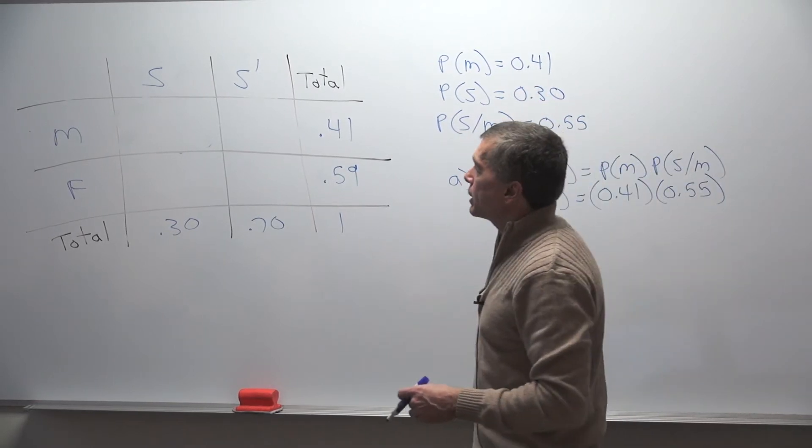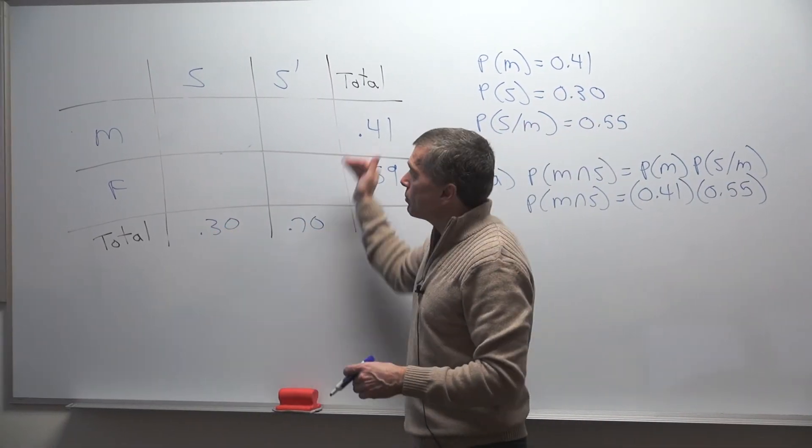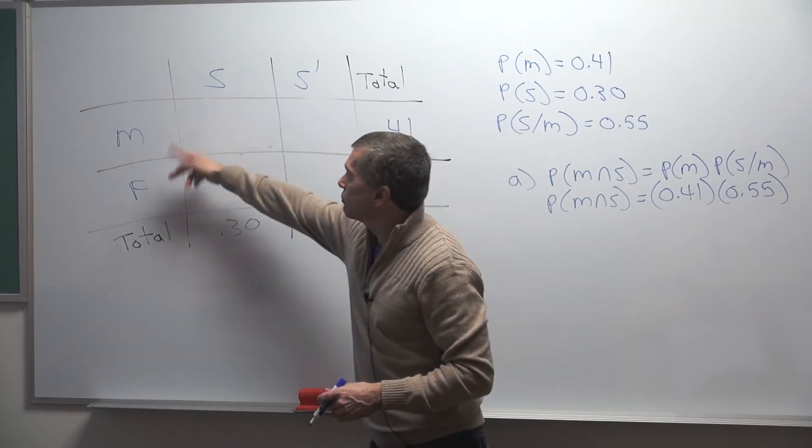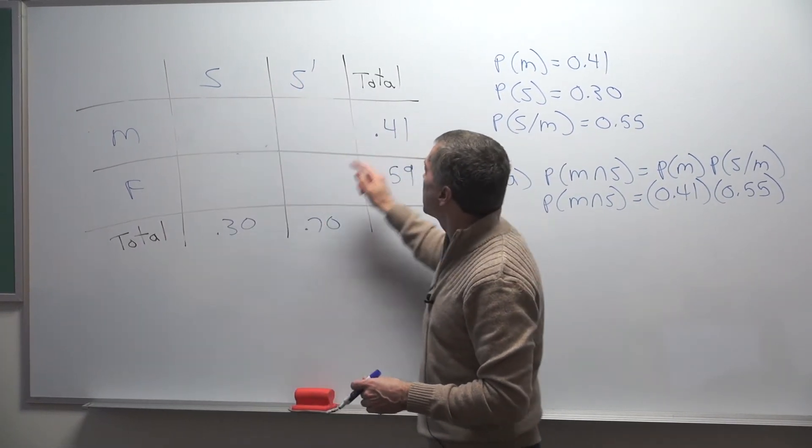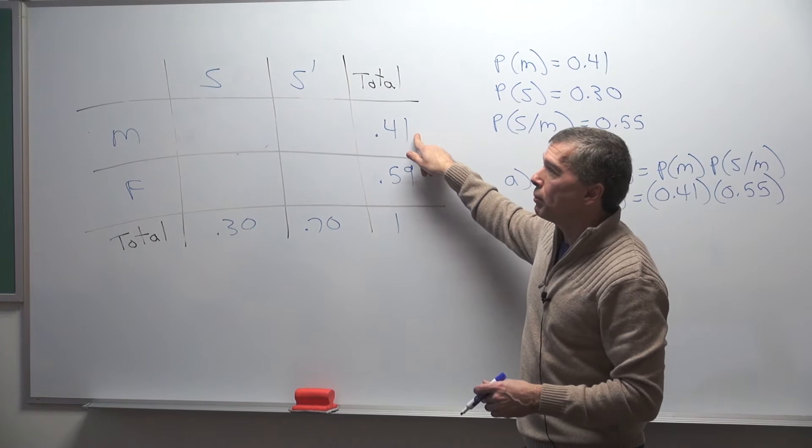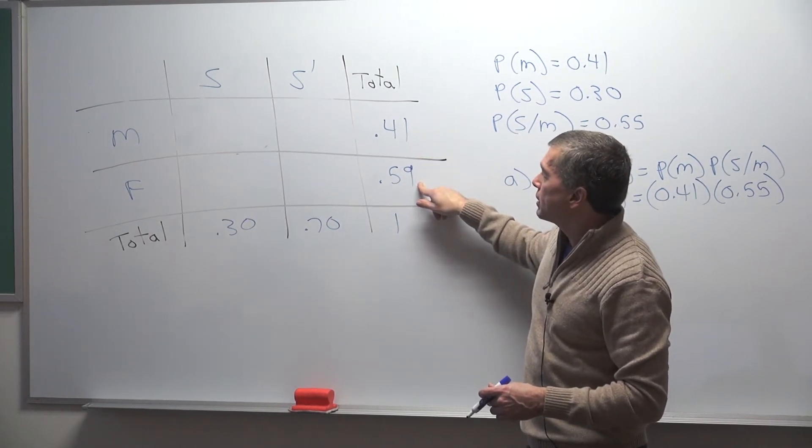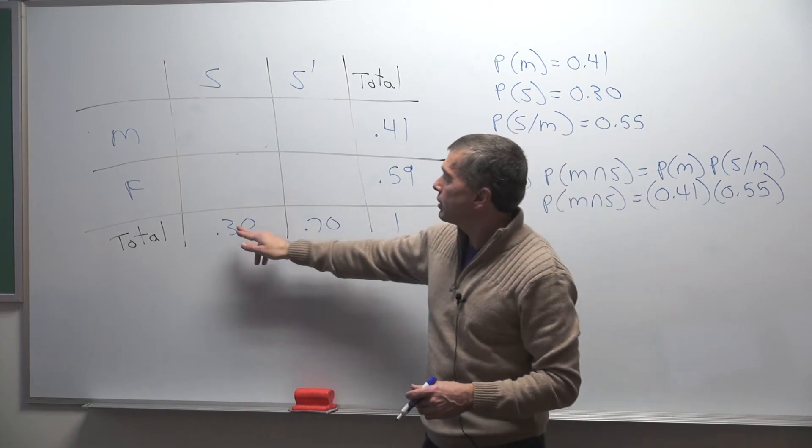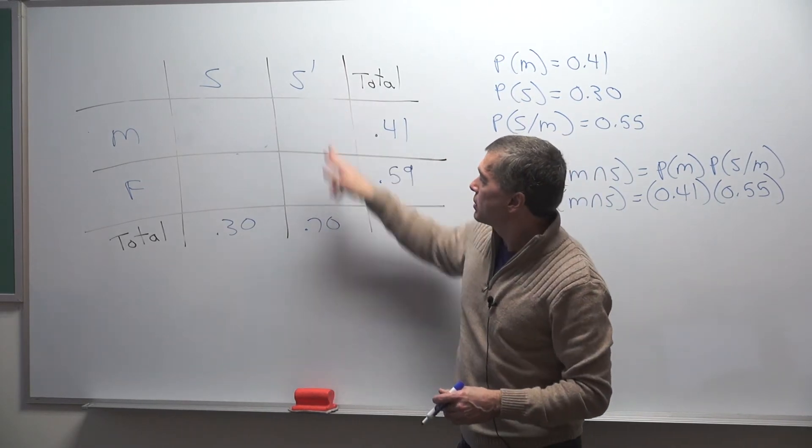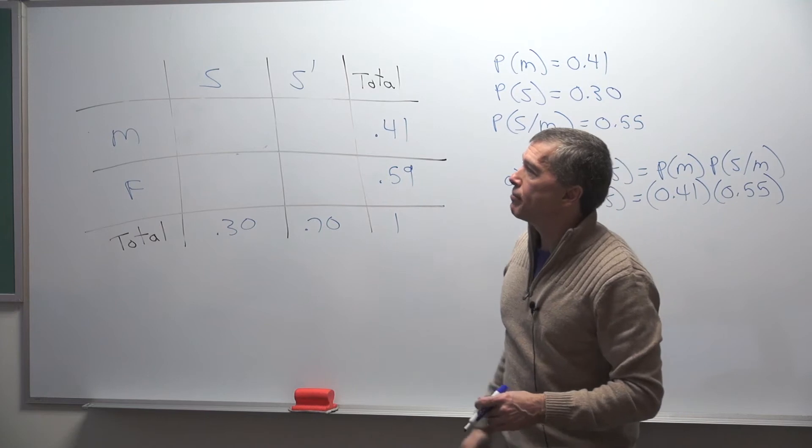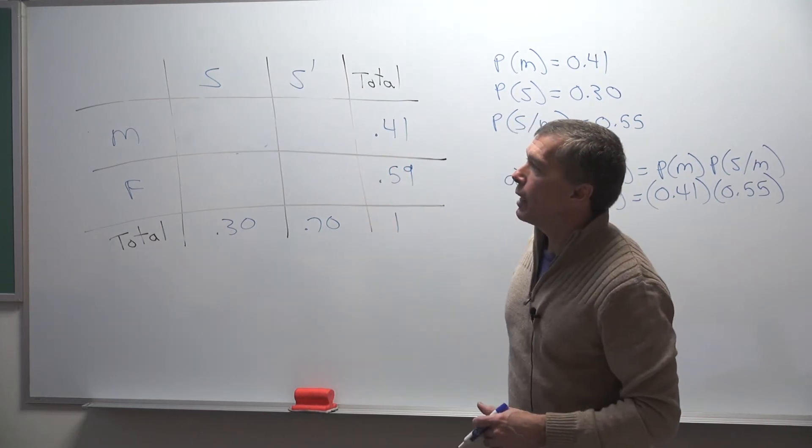Okay, that's all the information we're given. If we need to use a table, I would make up a table like this with male and female, statistics not statistics. And for example, male 41% was given to us, so therefore female has to be one minus that, 59%. Just like down here, statistics is 30%, so not statistics is one minus that or 70%. So if we need the table, we'll have it.